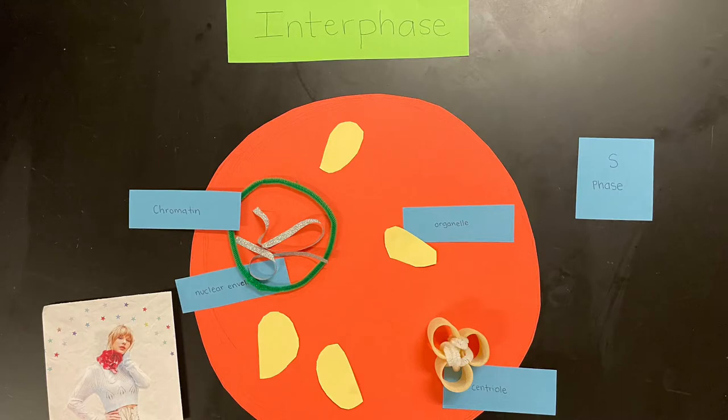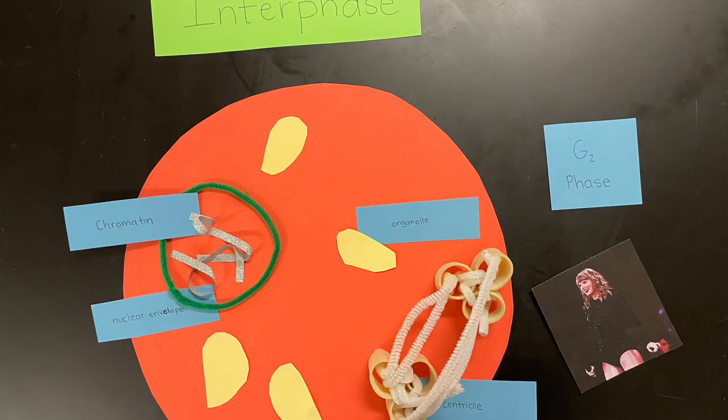Then comes the S phase, or synthesis phase, where the cell replicates its DNA, doubling the genetic material in the form of chromatin located in the nucleus. The final stage of interphase is the G2 phase, or second gap phase, where the cell becomes ready to enter the cell division stage.